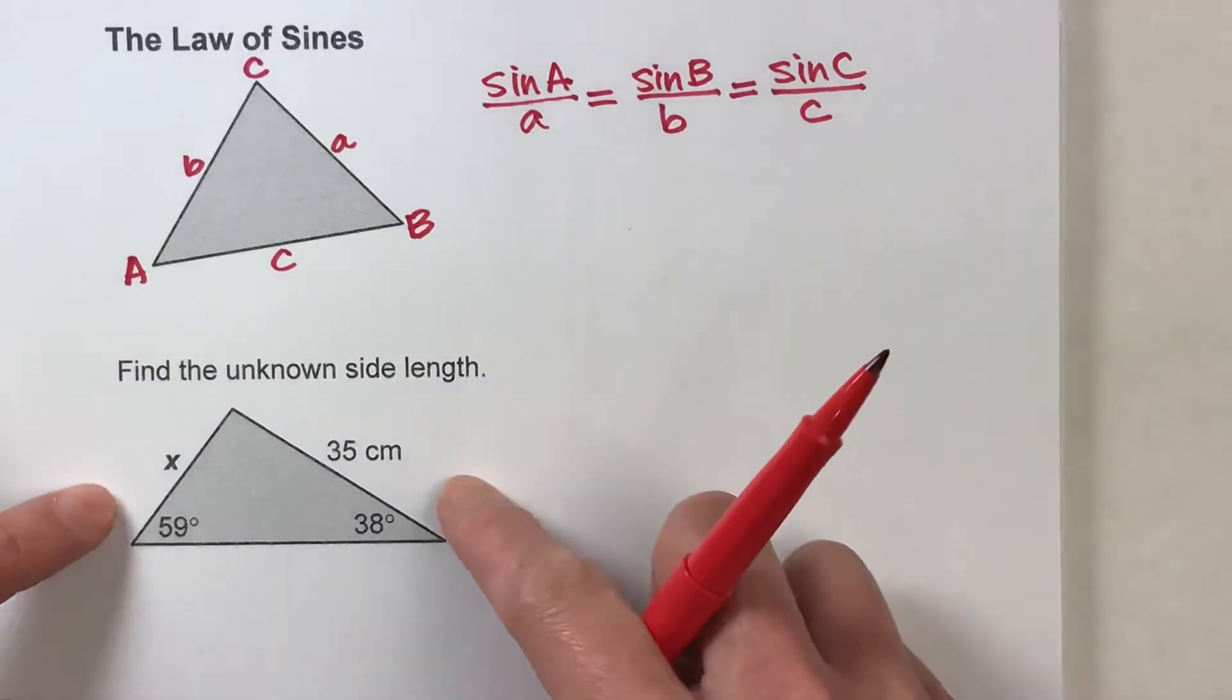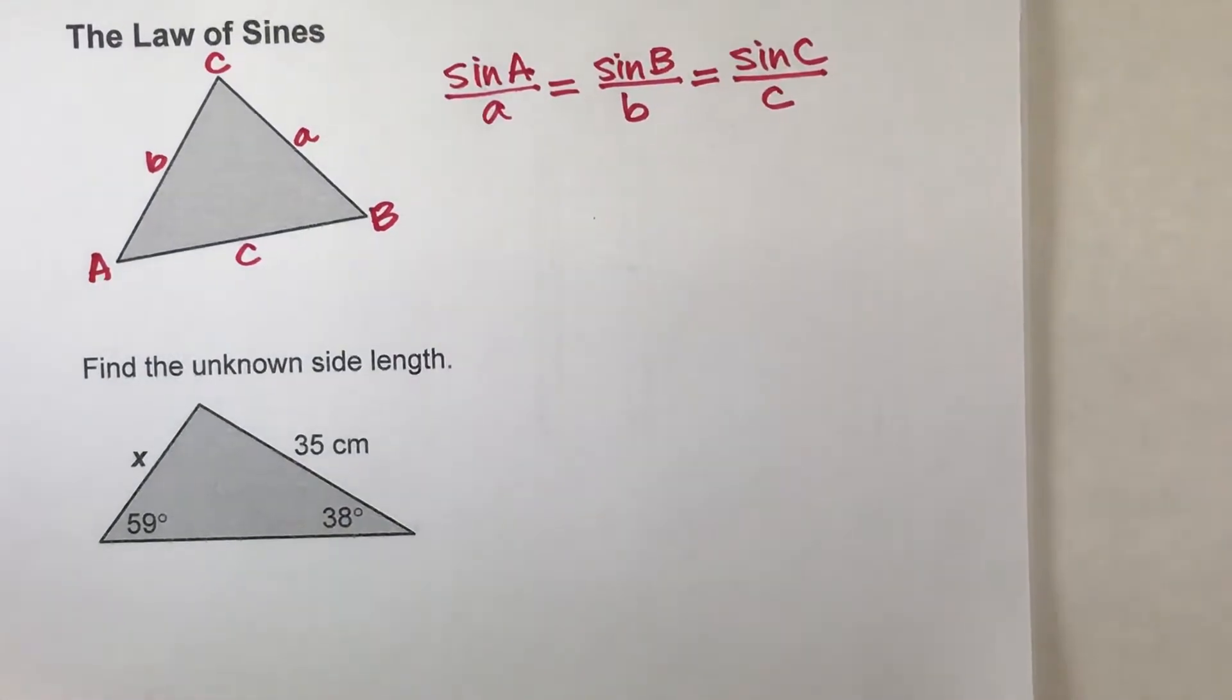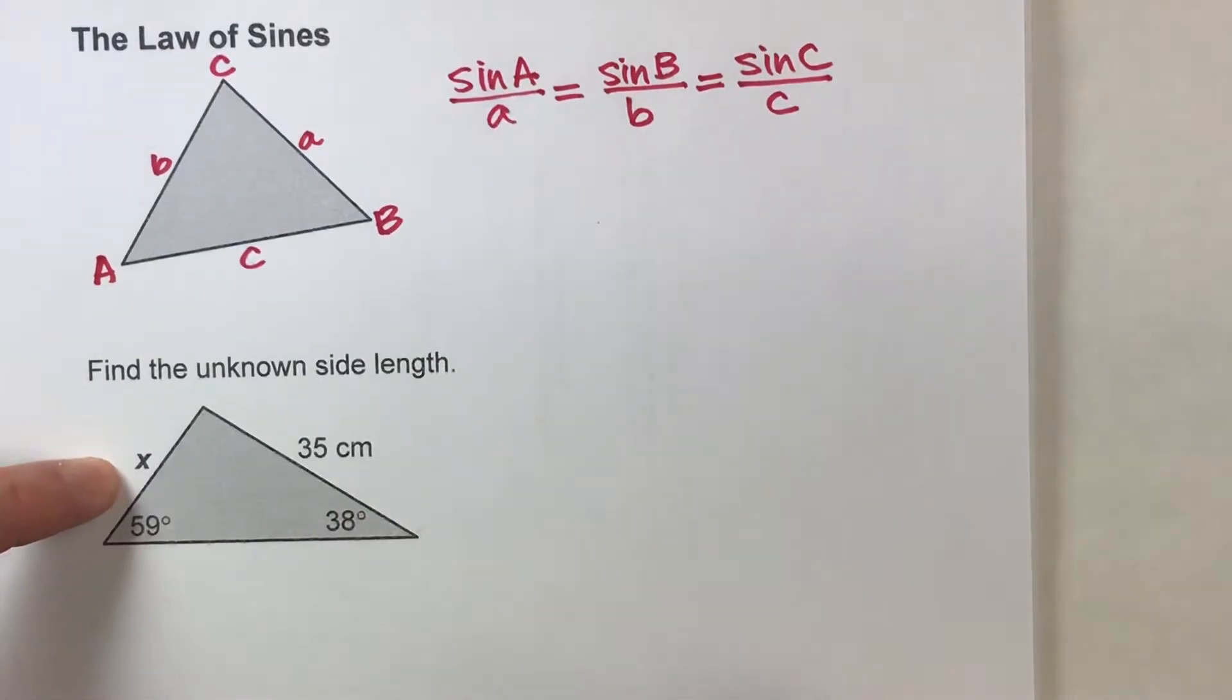So let's do an example where we're trying to find an unknown side length. Down below it says find the unknown side length. Notice we're given two angles. We're given one side and we want to find a missing side.